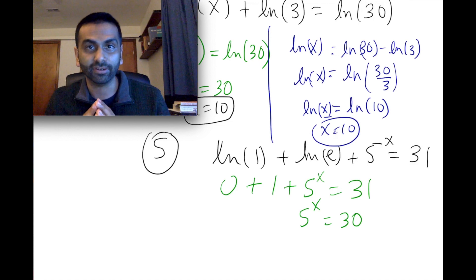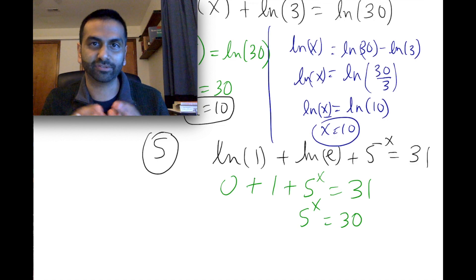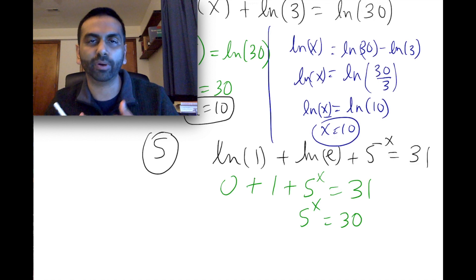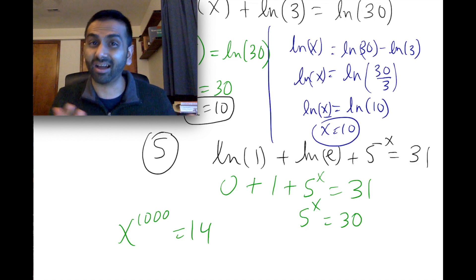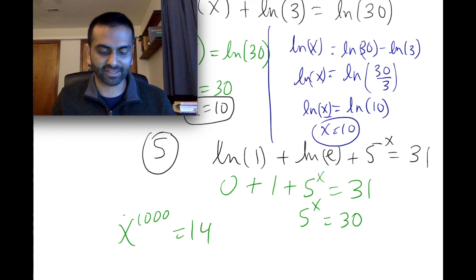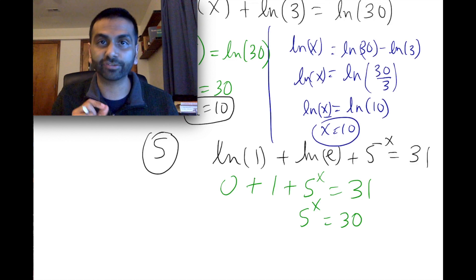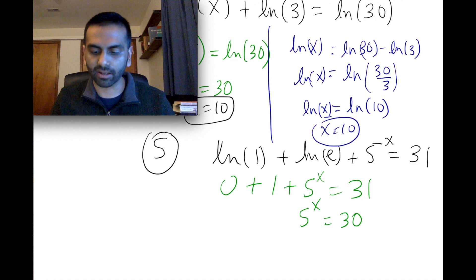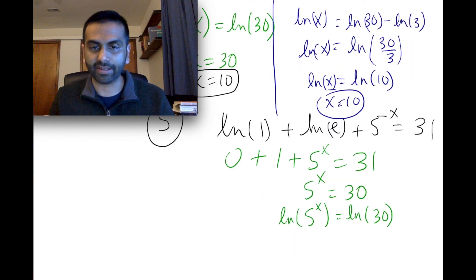If we wanted to know exactly what x is, here's a new strategy: take the log of both sides. When should you do this? Whenever you want to solve for something that's in the exponent — that's when you take the log of both sides. Note: if you had x to the thousandth power equals 14, you'd just take the thousandth root — you don't need logs. But here, x is the exponent, so we take the ln of both sides: ln of 5 to the x equals ln of 30. It doesn't matter if you use log or natural log — either way you'd get the right answer.